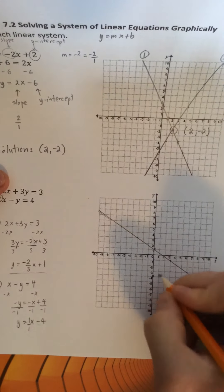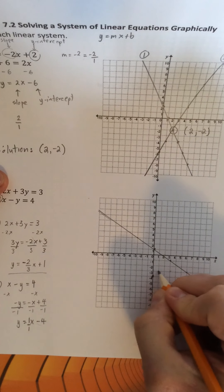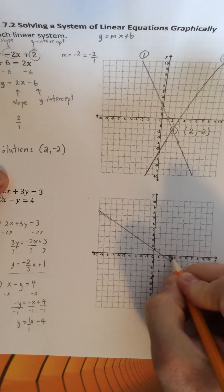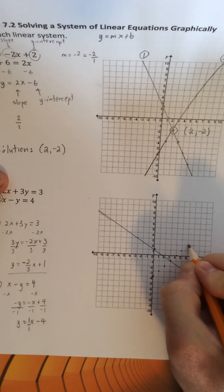So the slope on the graph is going to go up one space over one space. Up one to the right one. Up one to the right. Up one to the right. And that will continue on.